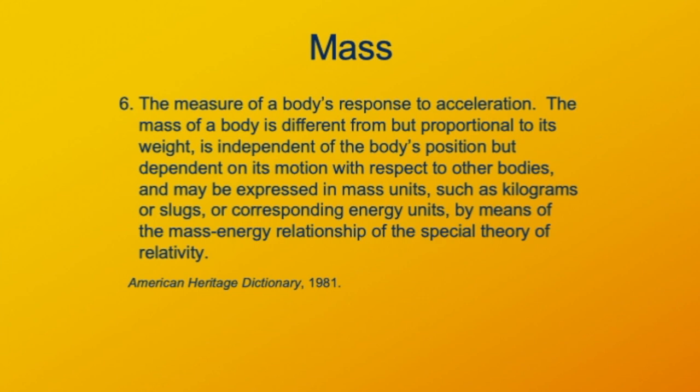Mass is a word used for a lot of things in the English language. In the 1981 American Heritage Dictionary, the physics definition is definition number six. The definition here isn't quite what we'll use in this course, but it's good enough for now. Once this definition brings up acceleration, it goes on to tell us what mass is not — namely weight. You might have heard in chemistry that mass is the amount of matter in an object, but that just gives a name to something we can't define any other way. The dictionary definition goes on to detail that mass relates to energy and to speed, which is sort of true, depending on how you interpret the special theory of relativity, which sadly is beyond the scope of this course.